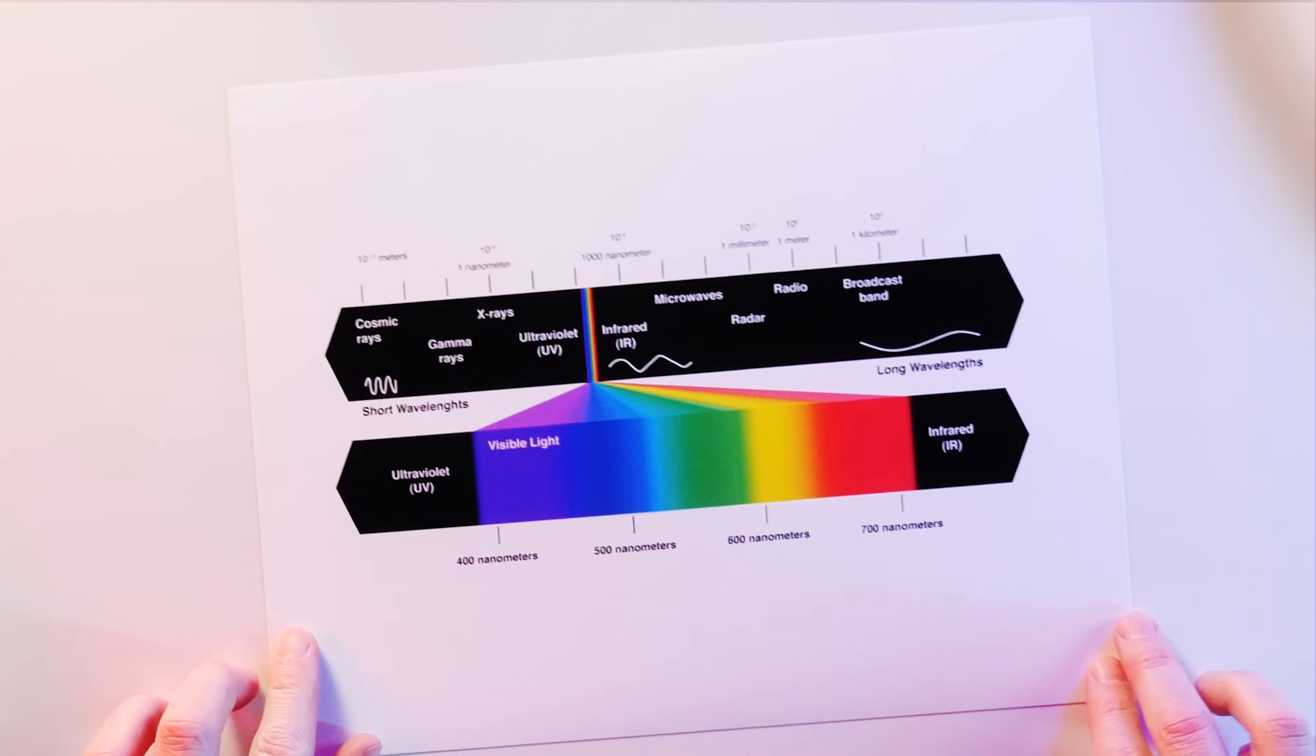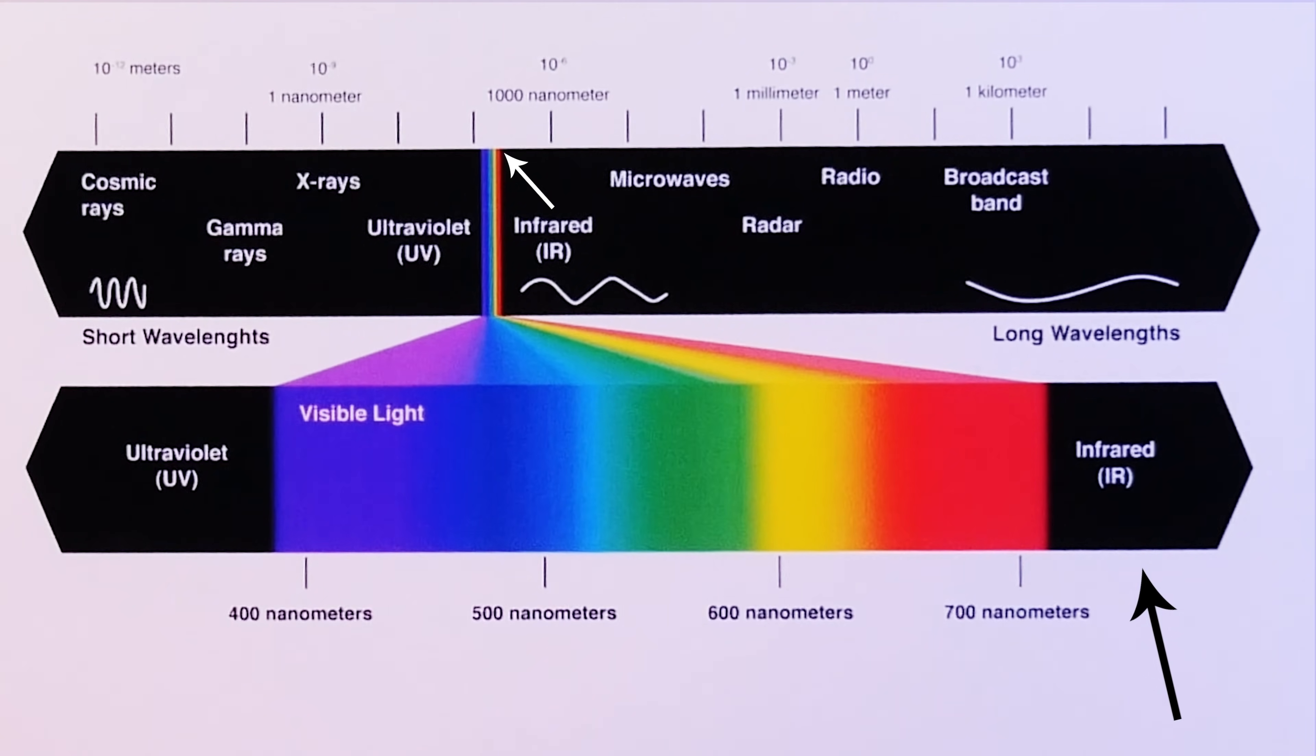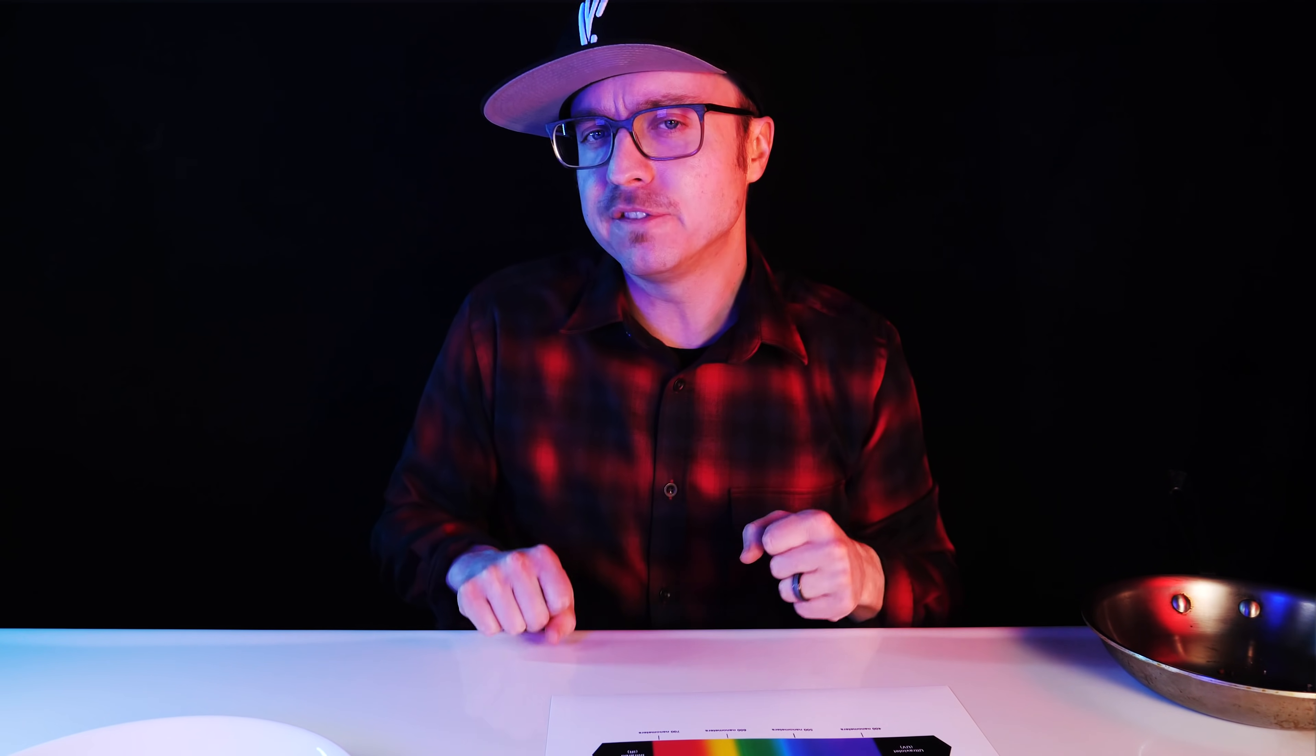Thermal energy that comes in the form of infrared radiation exists just below red on the visible spectrum of light. And infusing protective gear with reflective metal repels infrared radiation.